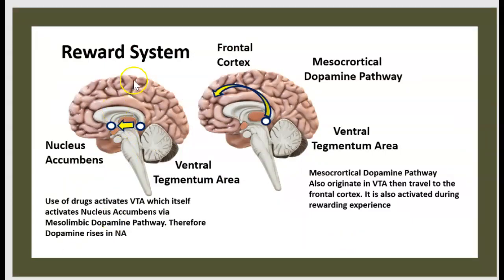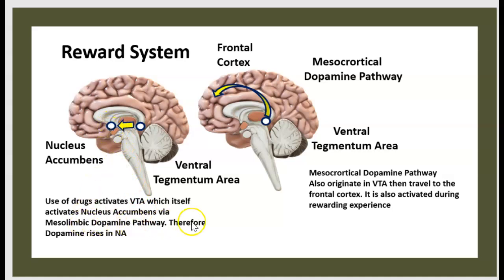The reward system: the mesocortical dopamine pathway connects the ventral tegmentum, which is here, to the frontal cortex, which is here. The use of drugs activates the ventral tegmental area, which itself activates the nucleus accumbens via the mesolimbic dopamine pathway. As a consequence, dopamine rises in the nucleus accumbens.